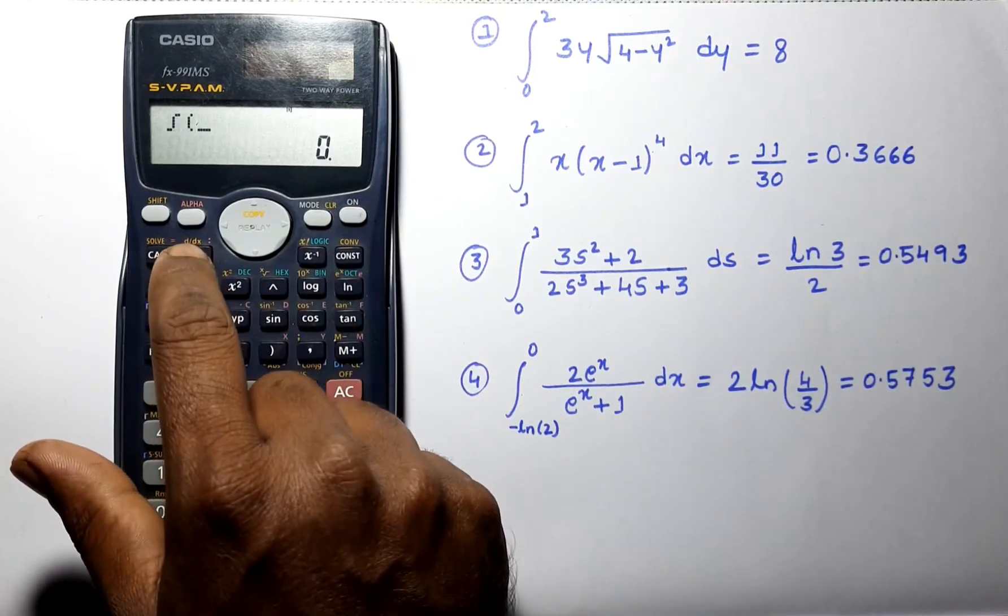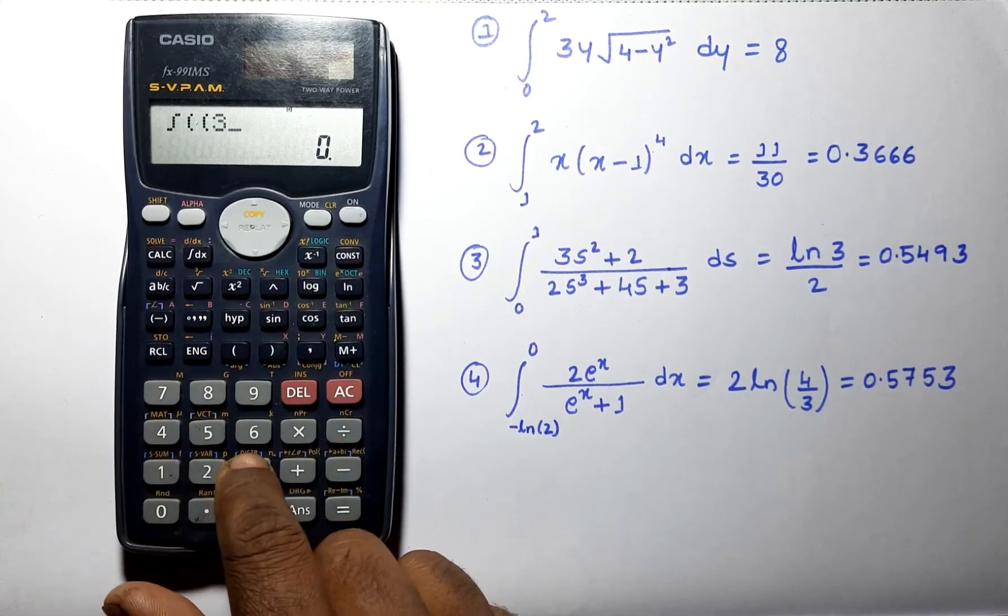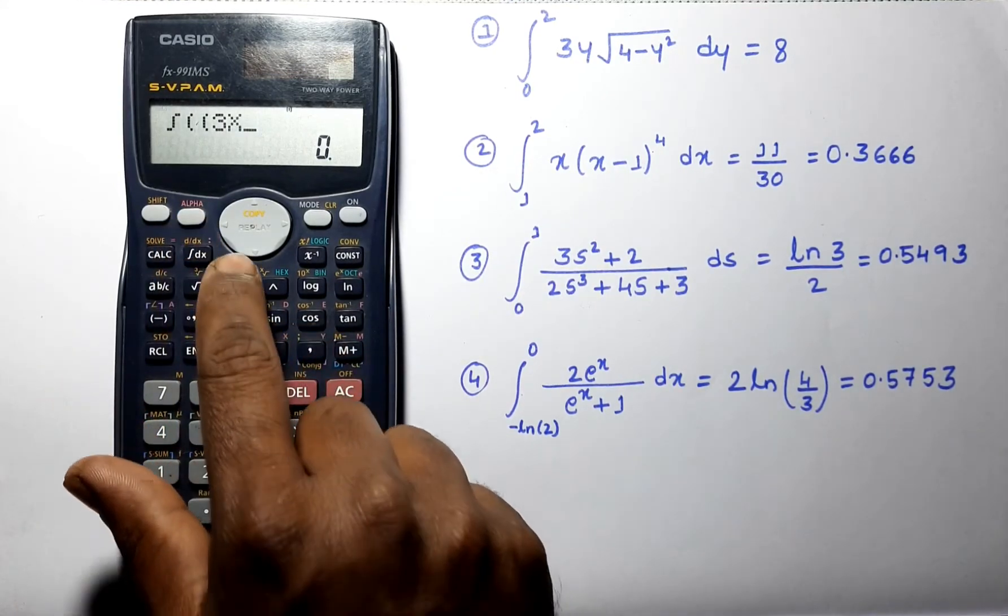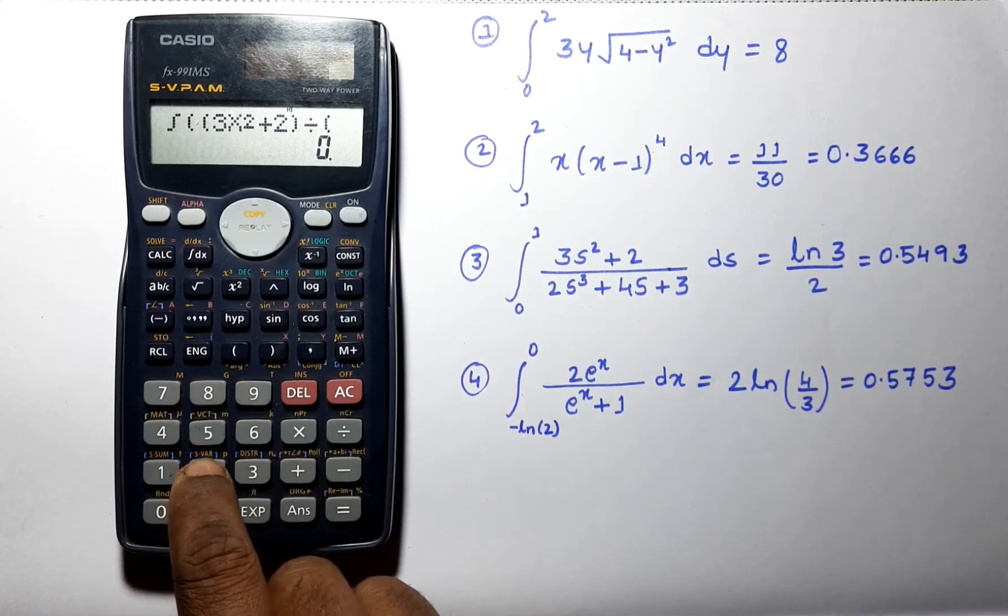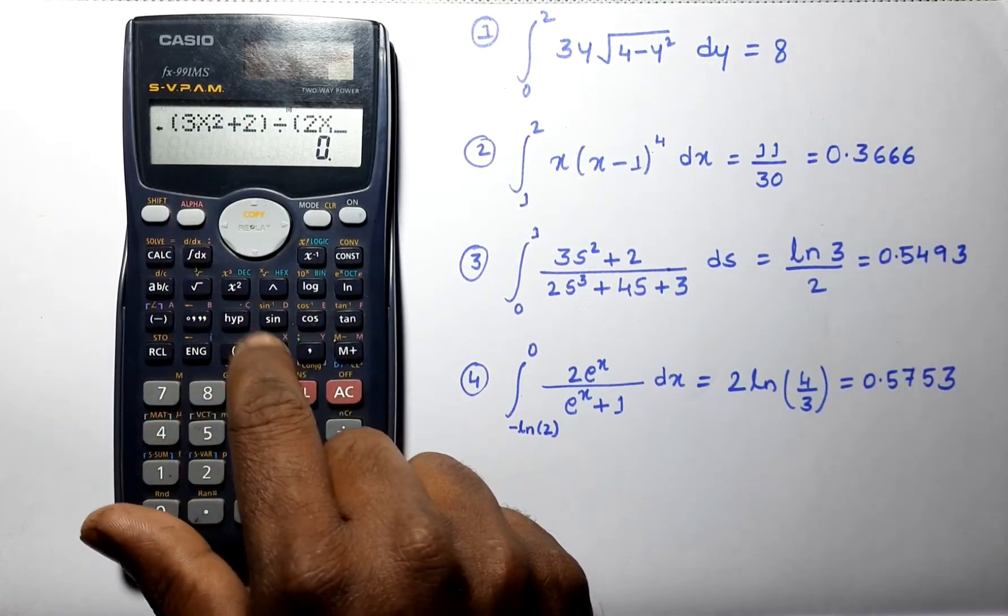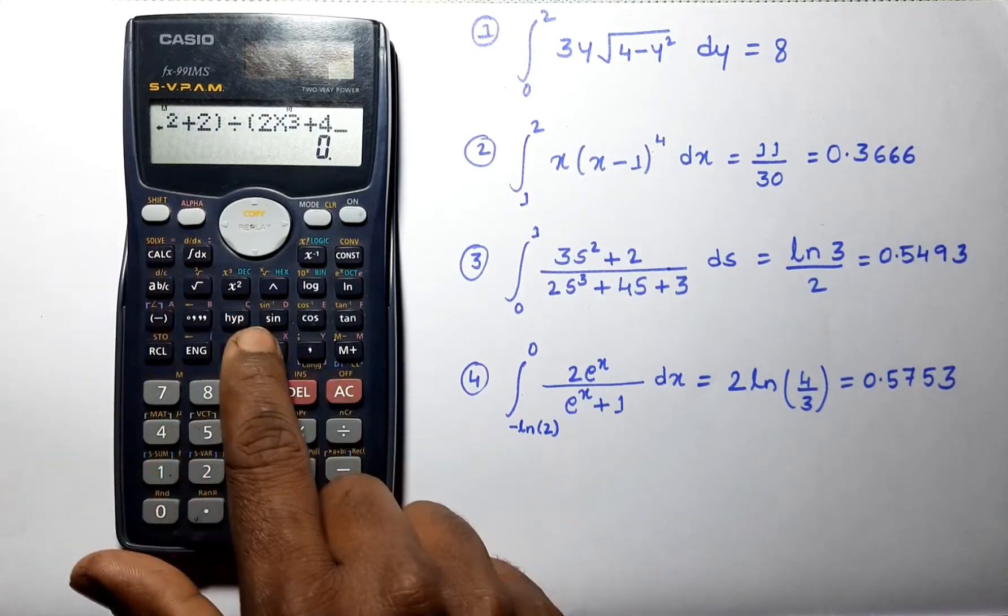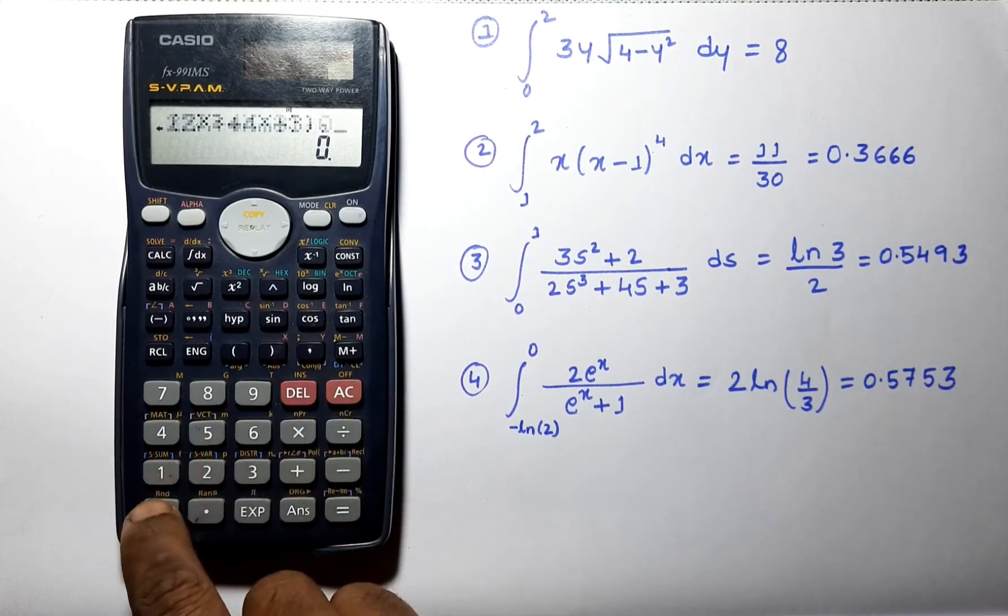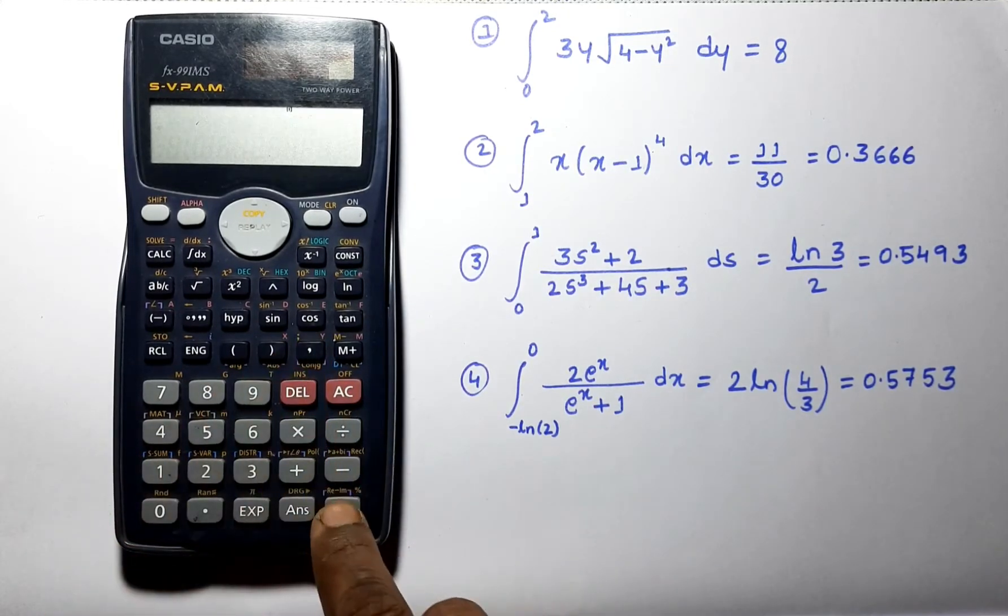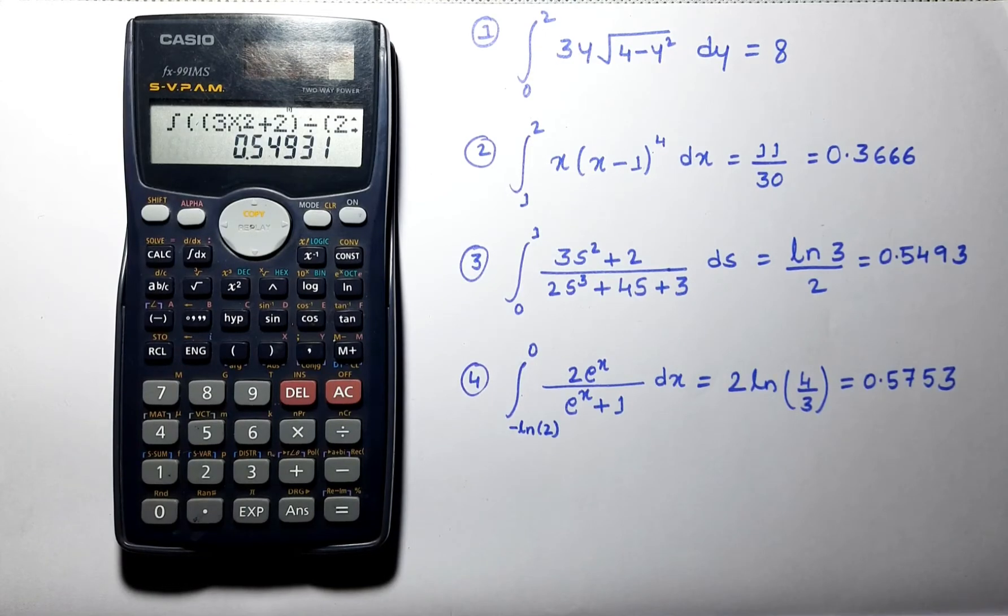Let us solve next problem, which is 3x square plus 2, close the bracket, and 2s cube plus 4s plus 3. Put the limits as 0, 1, and you can verify your answer here.